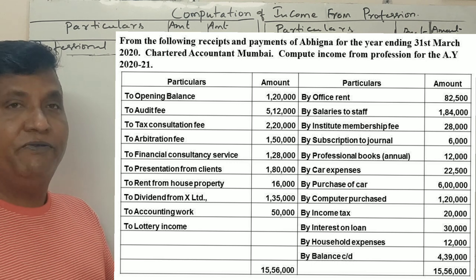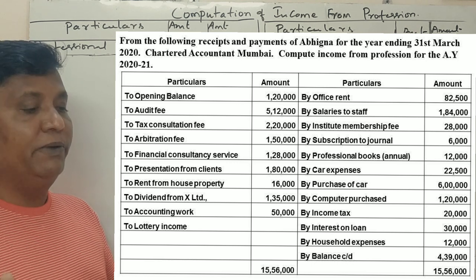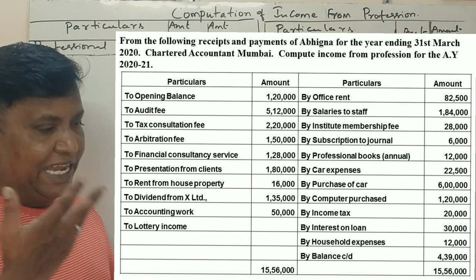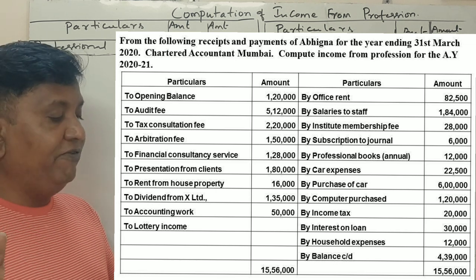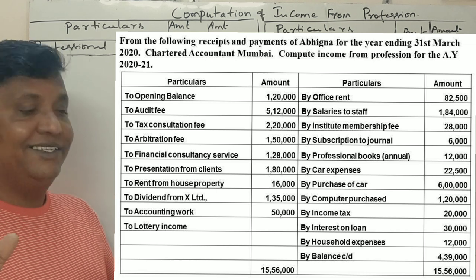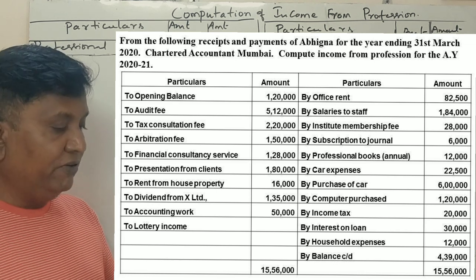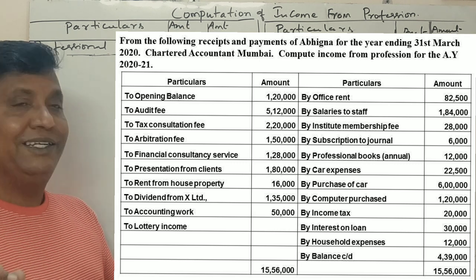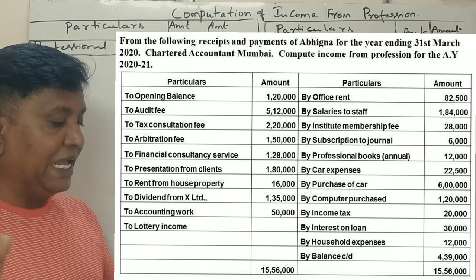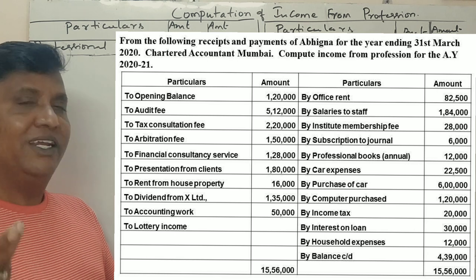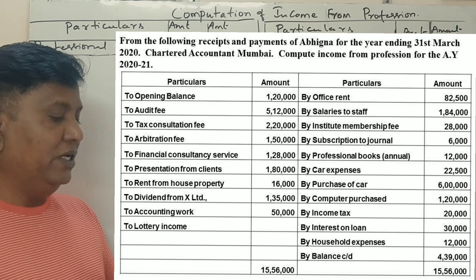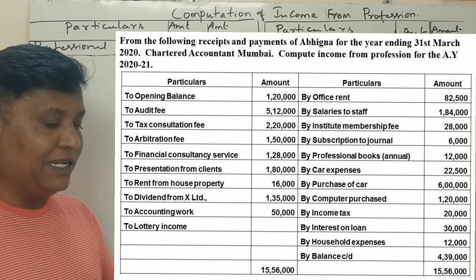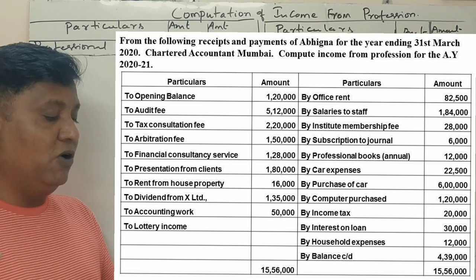Compute Income From Profession for the assessment year 2021. Opening balance of cash, audit fees, tax consultation fee, arbitration fee, financial consultancy fee, presentation from clients or gift from clients, rent from house property, dividends from X Limited, accounting work.